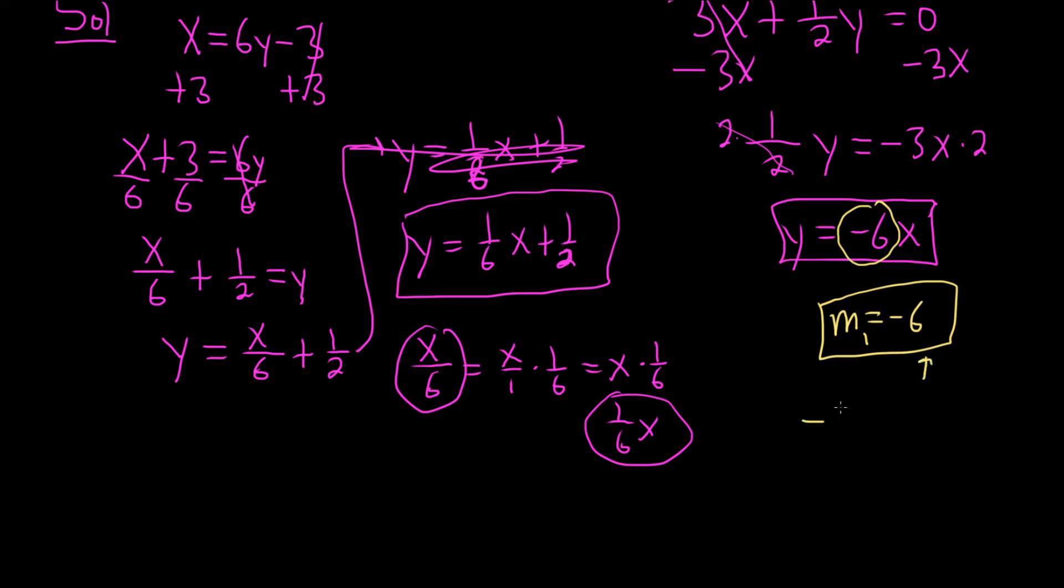If you take negative 6, which is negative 6 over 1, flip it and put a negative sign, you get negative negative 1 over 6, which is 1 over 6. The slope here, which I'll call m2, is 1 over 6. So if you take this slope, flip it and put a negative sign, you get 1 over 6. That means they're perpendicular.